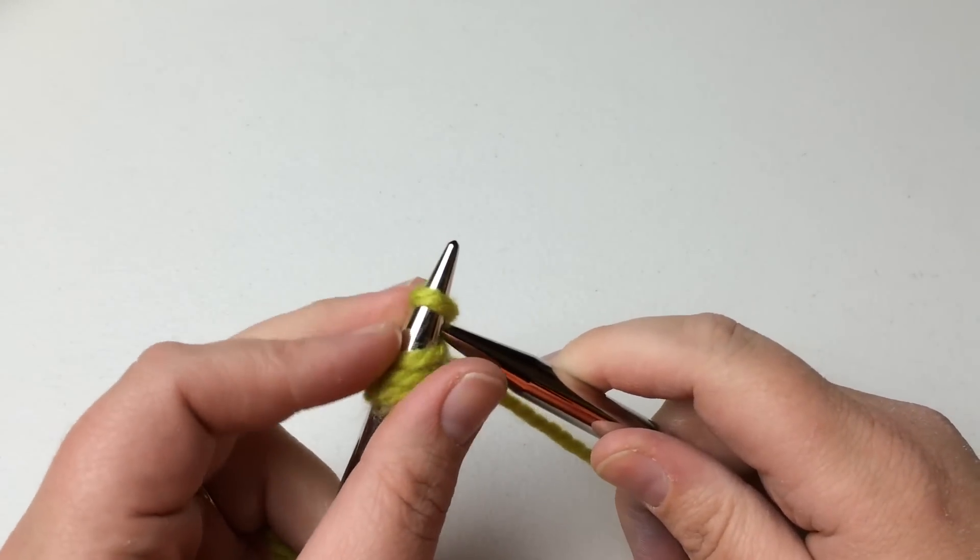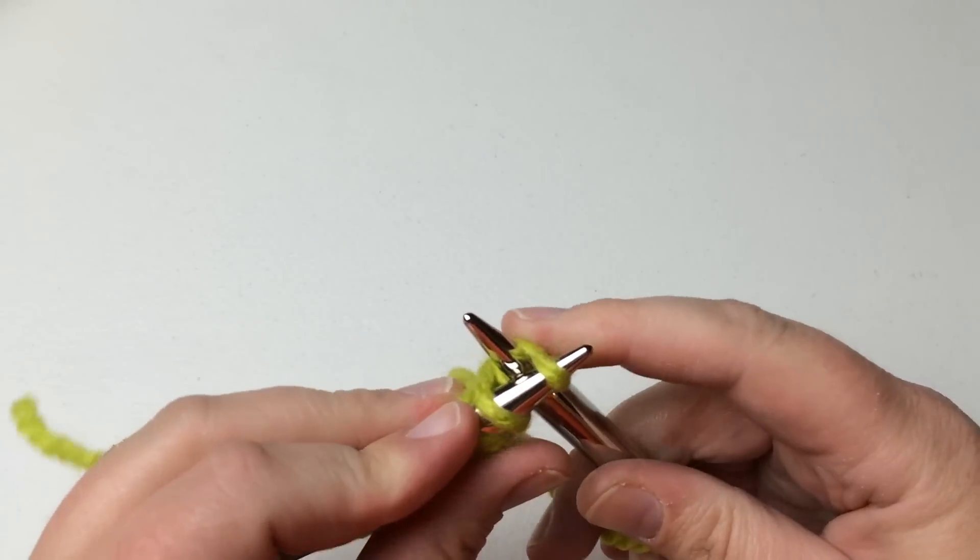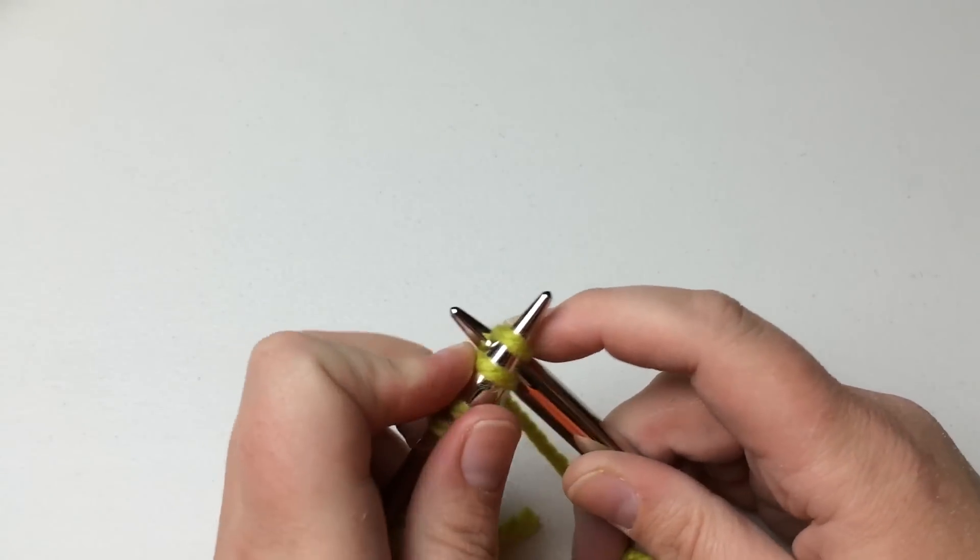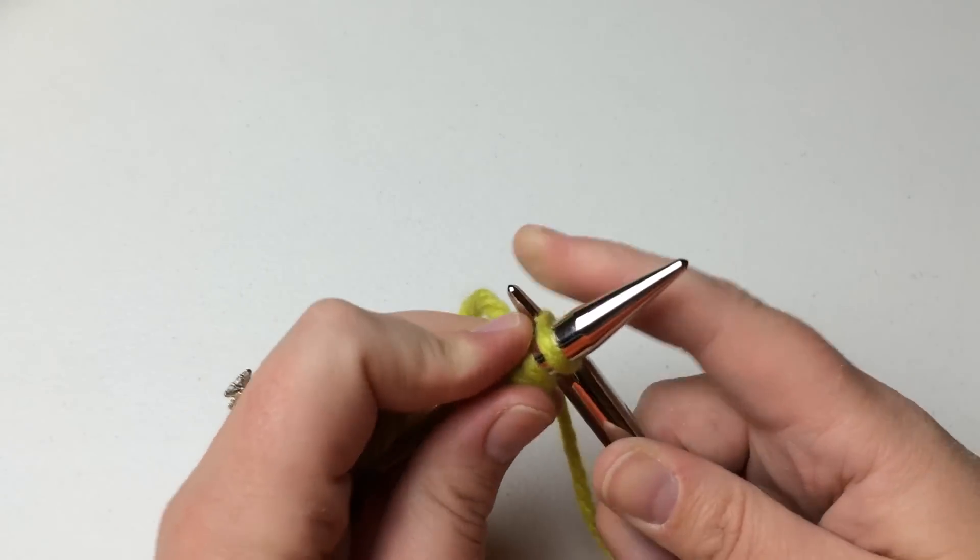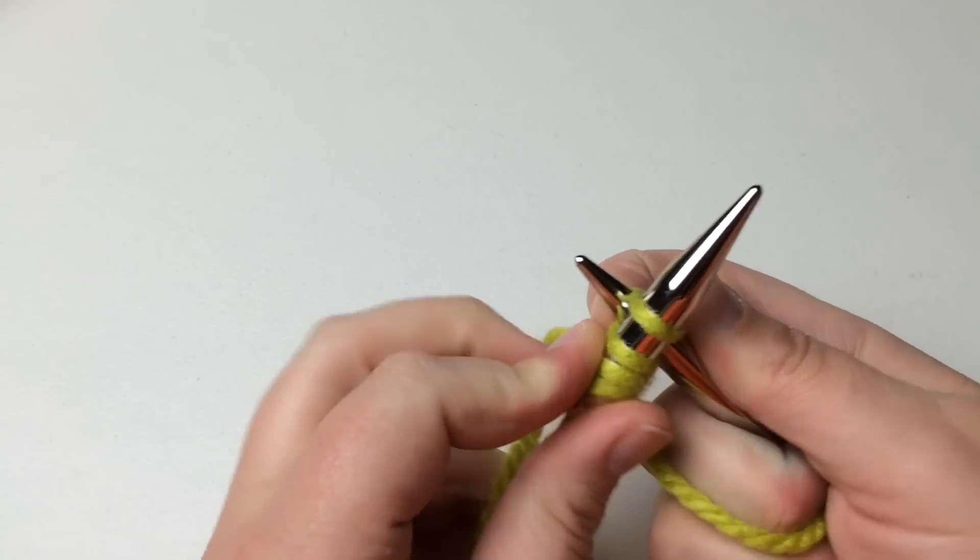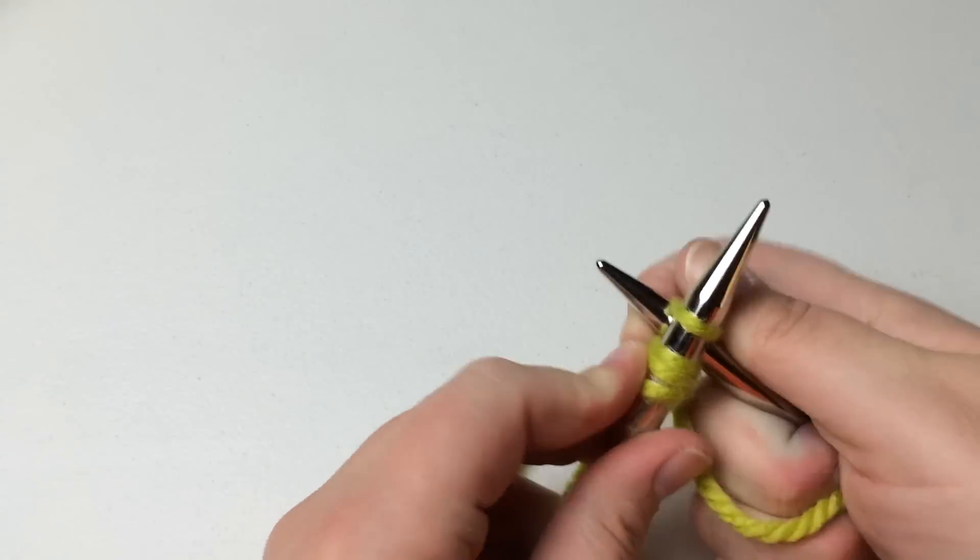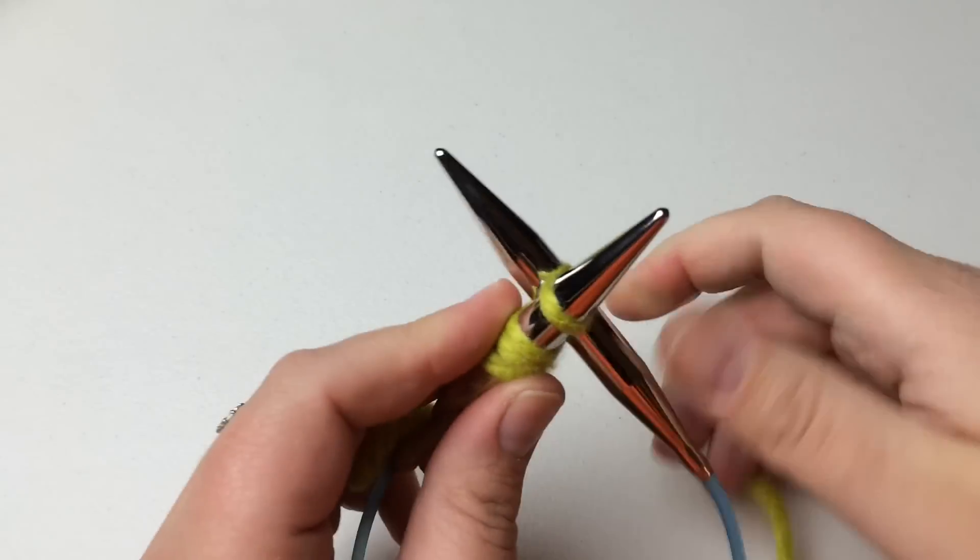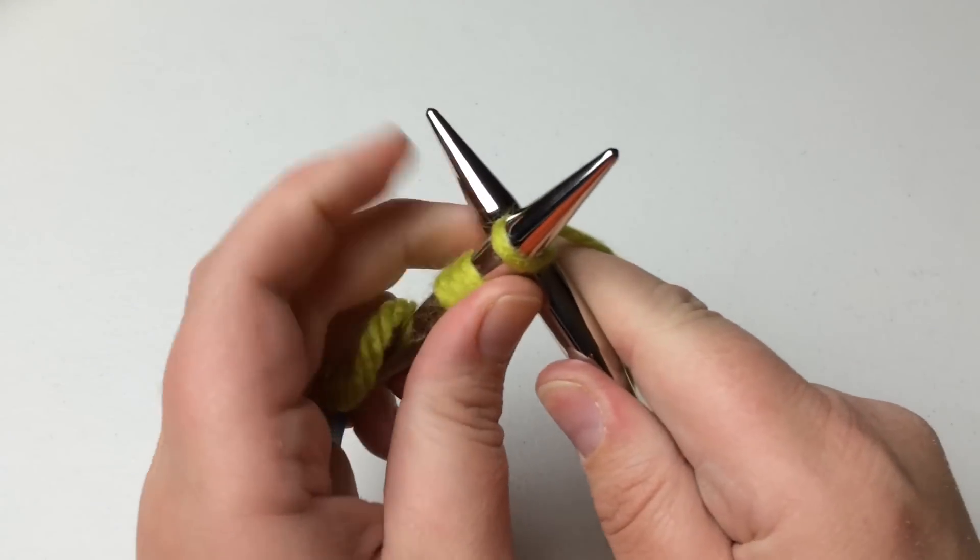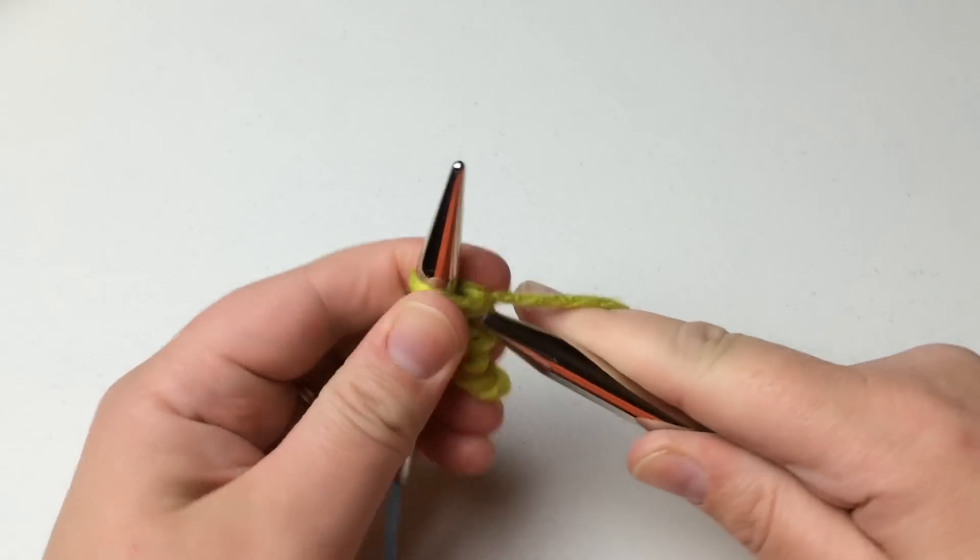Okay here we go. We're going to do this again. Go through both loops. If you need to do it on the tip here and then scoot it down to get the gauge, then you can do that. I tend to do it way too tight sometimes so make sure and get that on there. And then yarn over and then pull it on through.